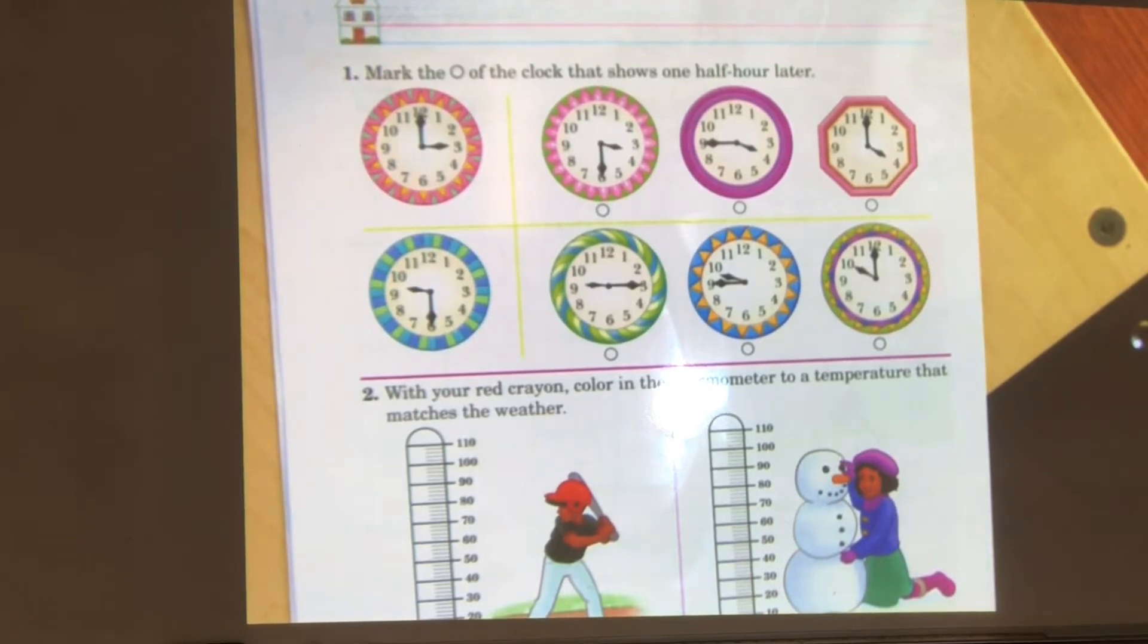Now, if the time is 3:30, what time will it be one half hour later? If the time is 3:30, the time one half hour later will be 4 o'clock. Remember, one half hour later equals 30 minutes.